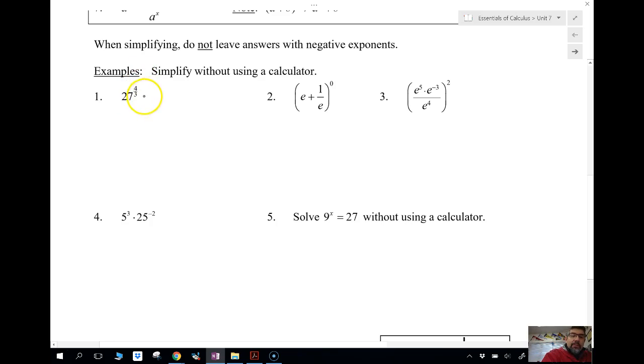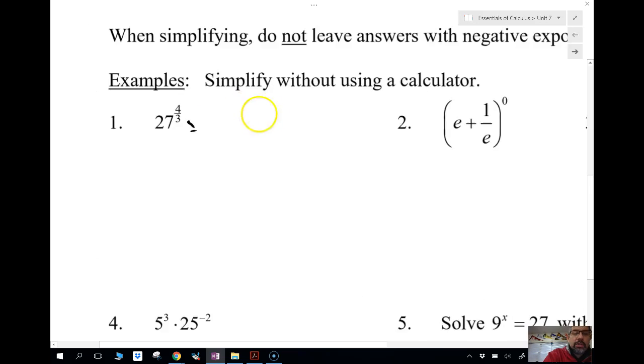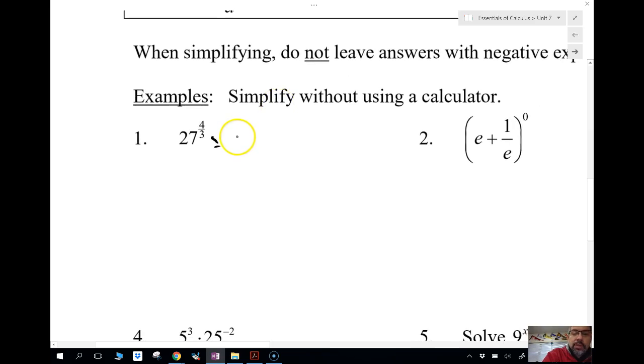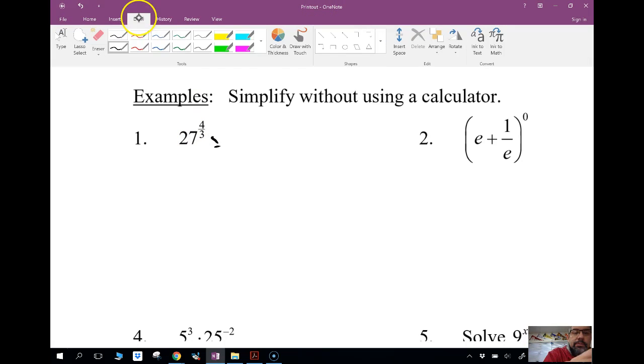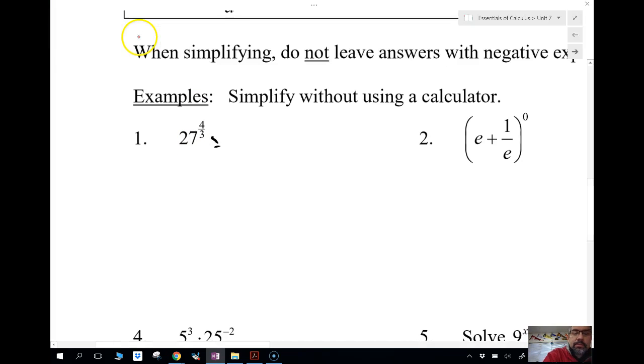So we have 27 to the 4 thirds. Let's zoom in here. 27 to the 4 thirds. This is the cube root, because the 1 third, the bottom right there is the root. The denominator is the root, and the 4 is the power. So really, this looks like this: the cube root of 27 raised to the 4th. The cube root of 27 is 3 raised to the 4th, so we get 81. That's it.